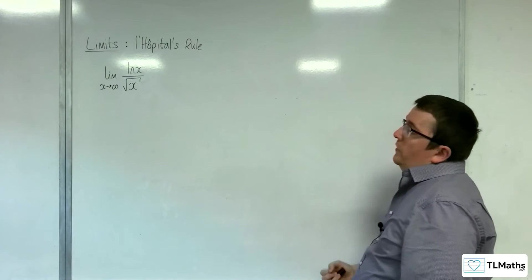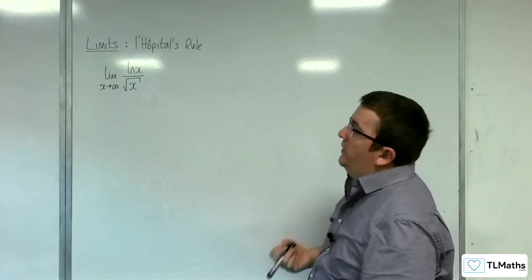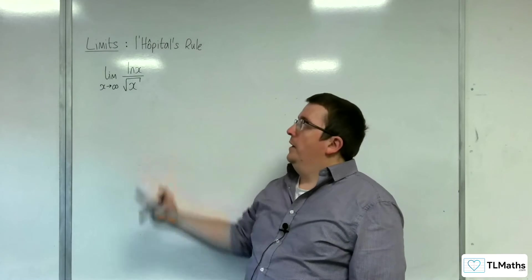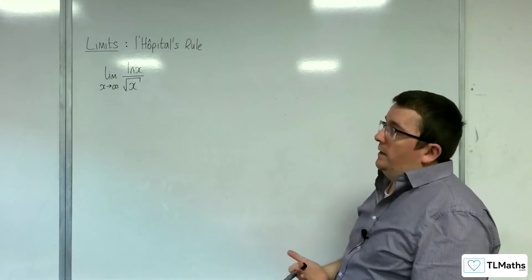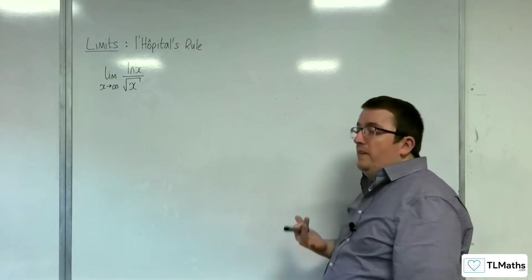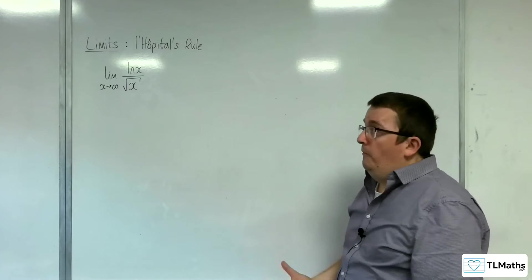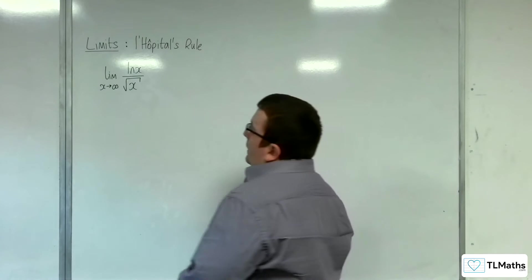So in this video we're going to look at the limit as x tends to infinity of the natural log of x divided by the square root of x. The first thing to do is to double check that we've got an indeterminate form, which is probably a bit more obvious in this example.